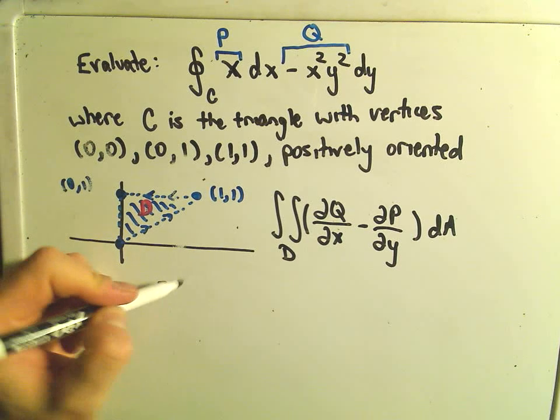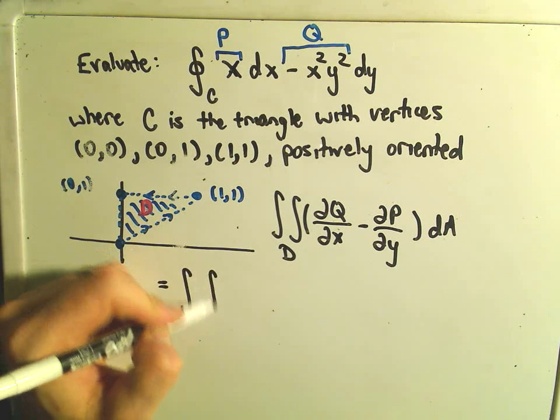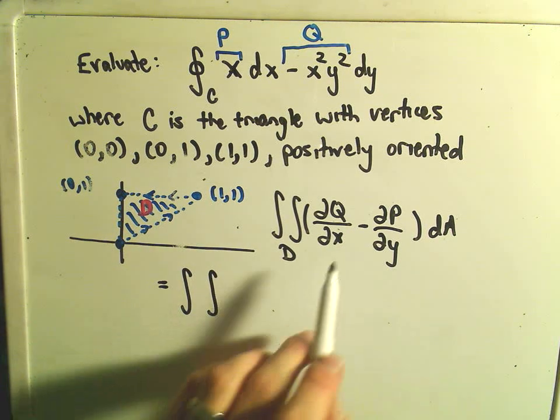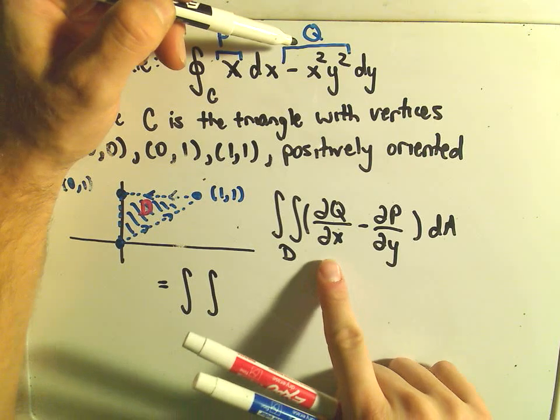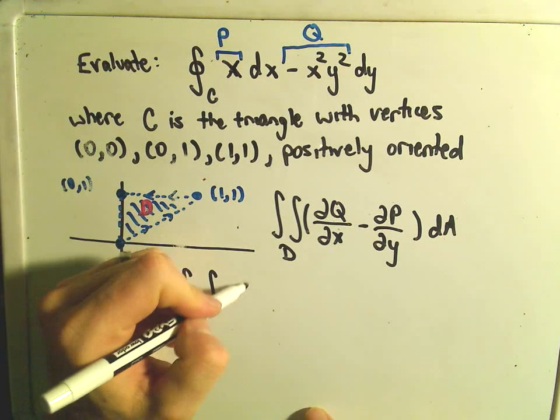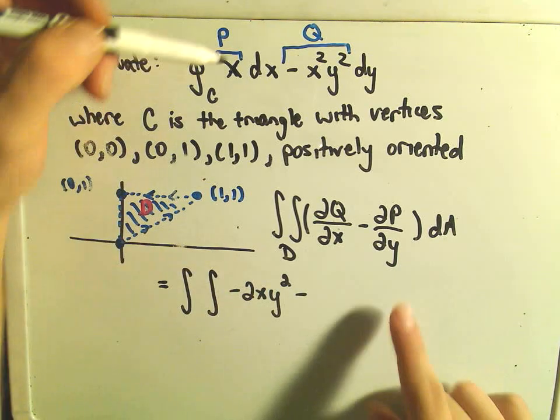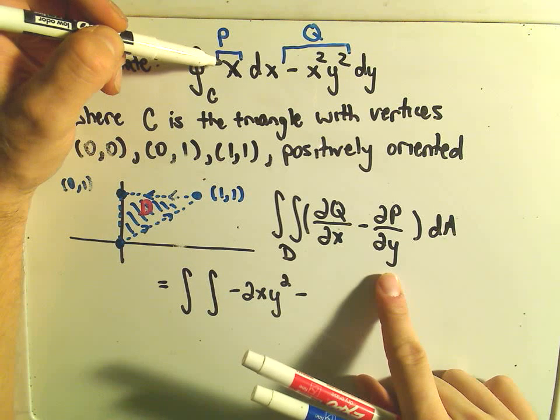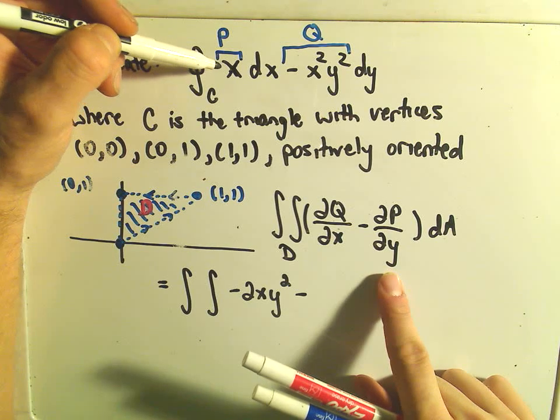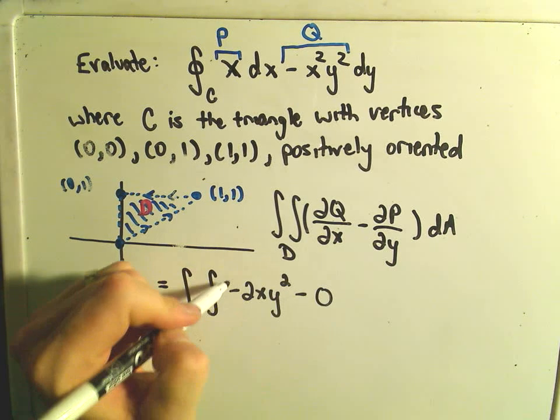Okay, so we'll figure out the limits of integration here in just a second, but it says if we take the partial of q with respect to x, to me it looks like we're going to get negative 2xy squared, minus, then we take the partial of p with respect to y, but there we treat x like a constant, so that actually just becomes 0.